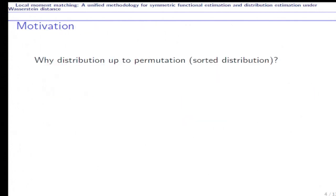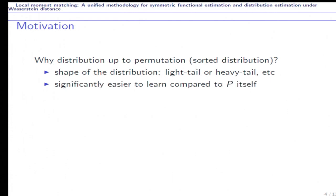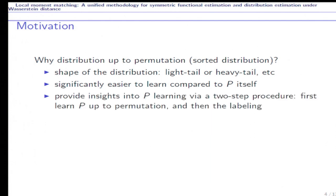So why do we care about estimating distribution up to permutation or just the sorted distribution? Firstly, the sorted distribution reflects the shape of the distribution, can tell us light tail or heavy tail, et cetera. Secondly, estimating the sorted distribution is significantly easier than estimating the unsorted distribution, that is estimating p itself.